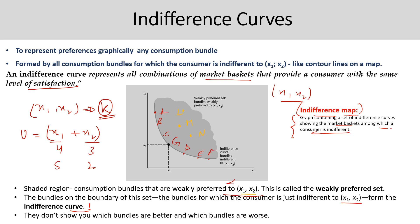An important point to emphasize: indifference curves do not show you which bundles are better and which are worse. If a consumer has to decide which bundle — A, B, C, or F — is better, you cannot actually tell. You can only say they are going to provide equal utility, but you cannot get any insight into which one is better. The plot of an indifference curve does not tell us which consumption bundle is better or worse. Please note this point.